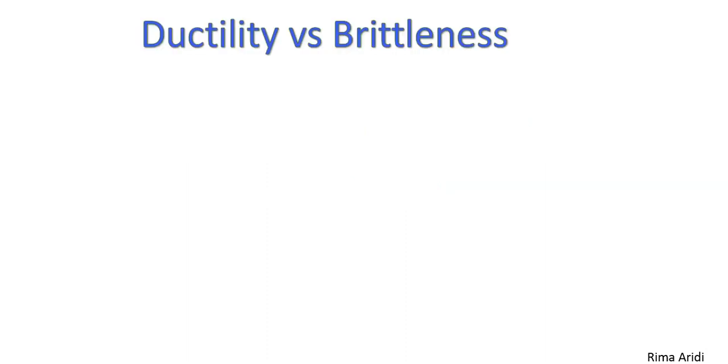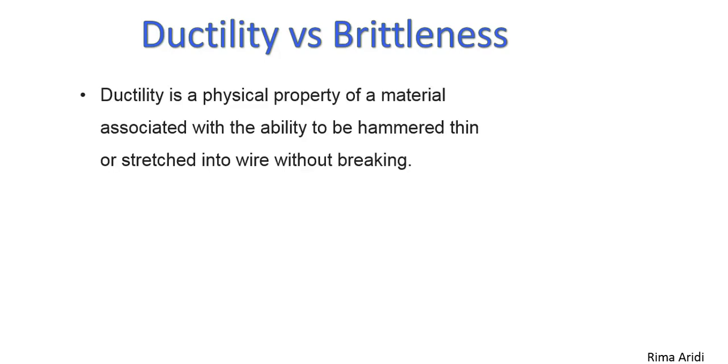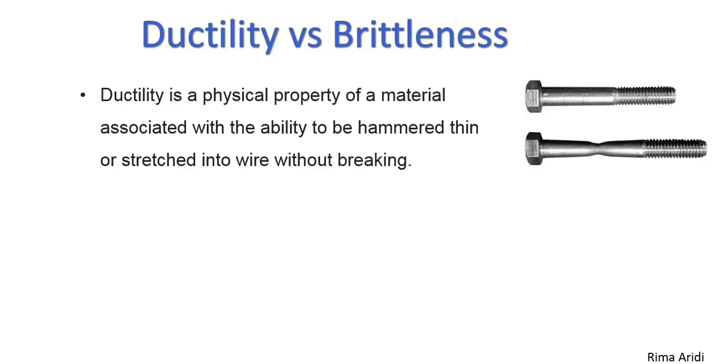First, let's start by defining ductility and brittleness properties. Ductility is the ability of a material to stretch into wire or being hammered without breaking. If you notice here, the screw is under tensile stress and it didn't break. You can see this part becomes thinner and it may also become more thin like a wire, but it depends on the type of material and how much ductility it has.